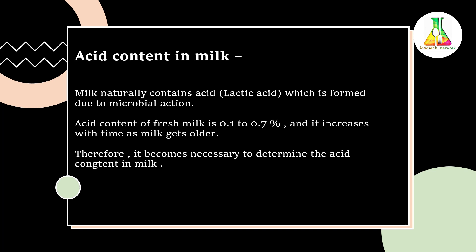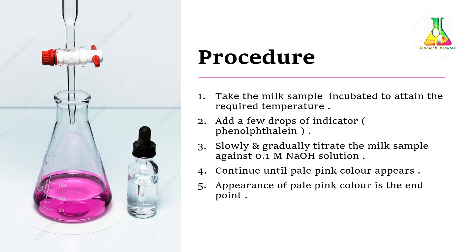Let us see how we do it. As you can see on your screens, it is again a type of titration. First of all, we need to take the milk sample, then add a few drops of indicator — in this case, phenolphthalein. Phenolphthalein turns pink in basic medium. We will slowly and gradually titrate the milk sample against 0.1 molar sodium hydroxide solution.